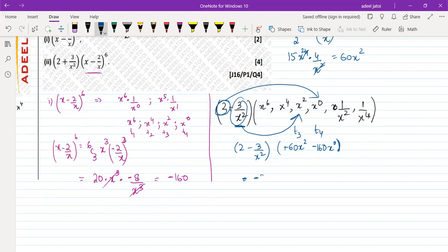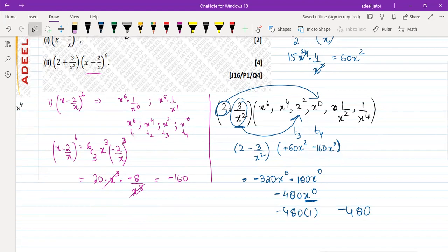so this should be minus 320 x to the power 0. whereas 3 multiplied by 60 will be minus 180 x to the power 0. So the end result is minus 480 x to the power 0, which is independent to the x. So minus 480, your coefficient is minus 480 for part 2.